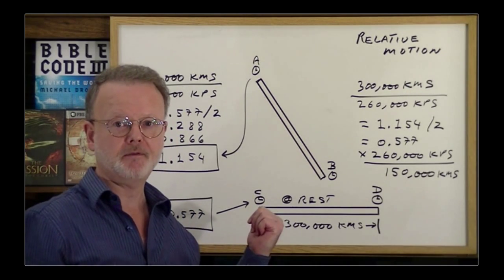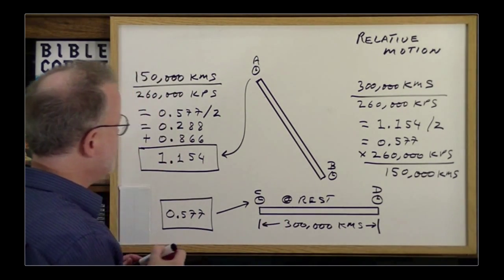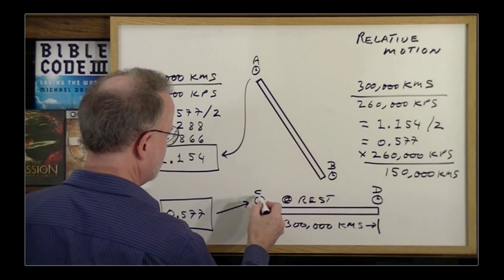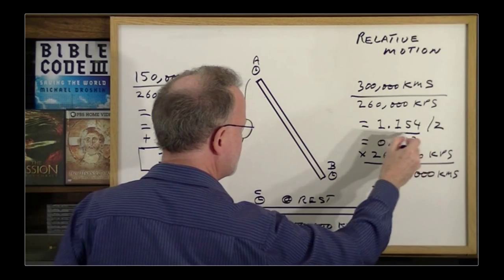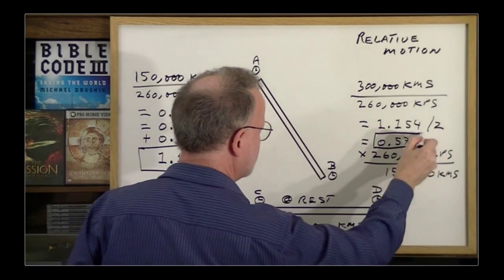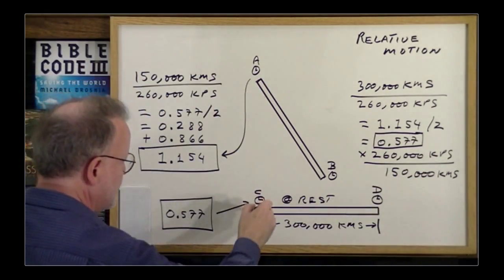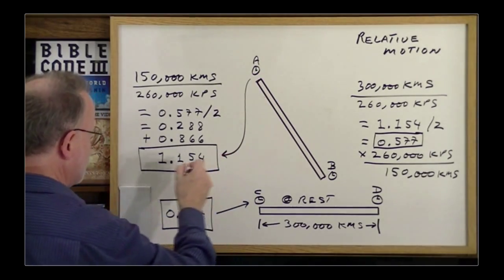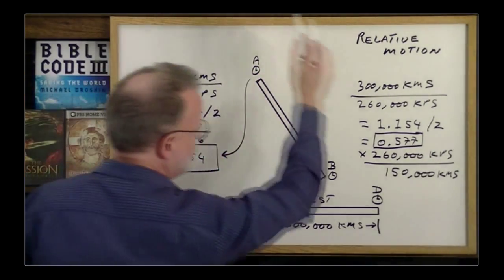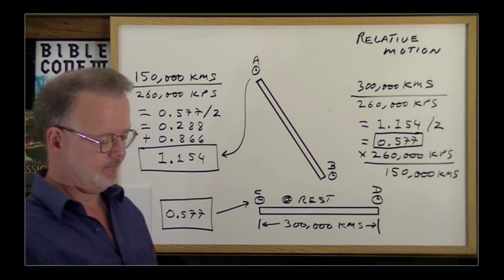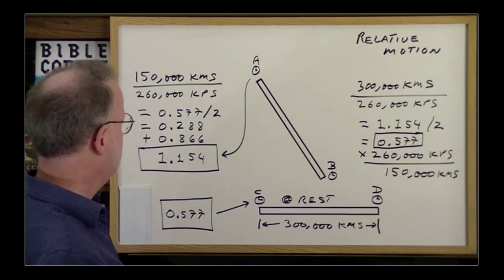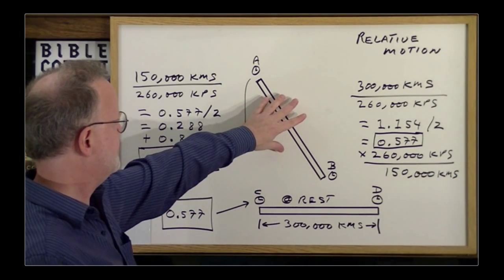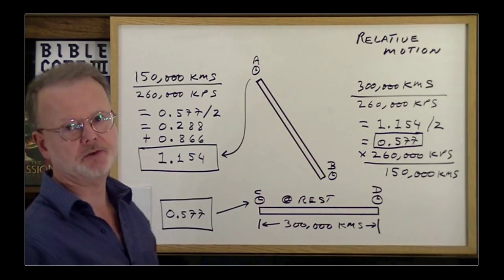Now, when B went from here, like the front here, went from here to here, he measured that much of a time period. When the rear ends lined up, Mr. A measured this much, which is twice as much. Therefore, based upon that and kindergarten math, from his point of view, this spaceship is twice as long as this one is.